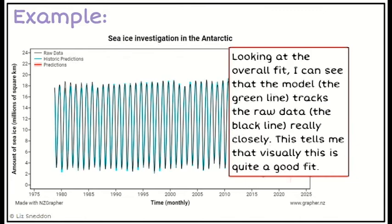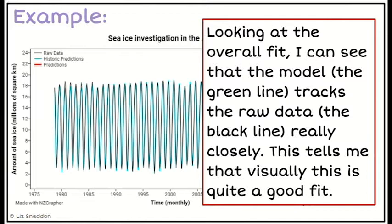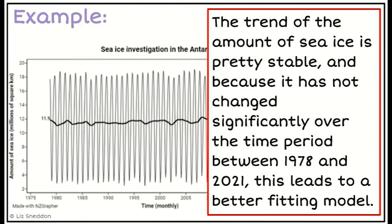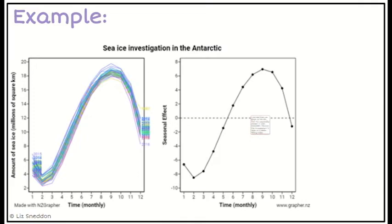Let's look at a worked example. The first thing we want to do is look at the black and green lines, and we can see that they track really, really well — so visually this is a good fit. Then I think about the trend: in this case the trend line is pretty stable overall across all of that time. A stable trend means the model is going to fit better, and that's one of the reasons why this model fits well.